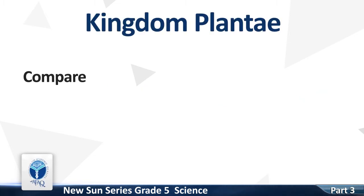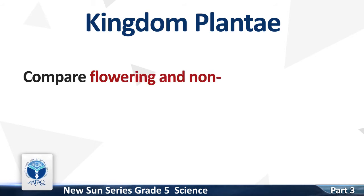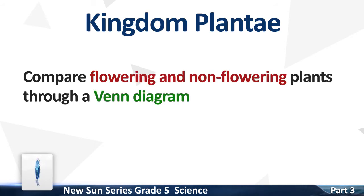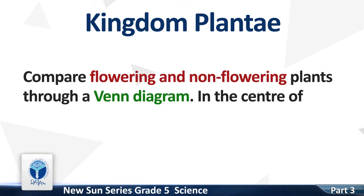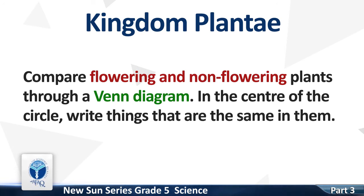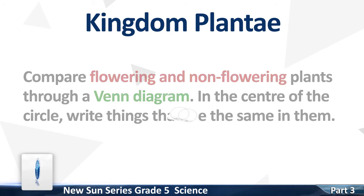Compare flowering and non-flowering plants through a Venn diagram. In the center of the circle, write things that are the same in them. Let's write.